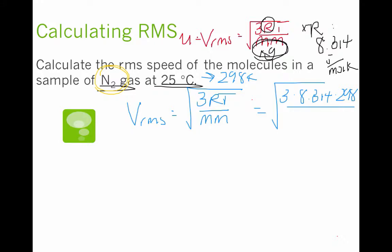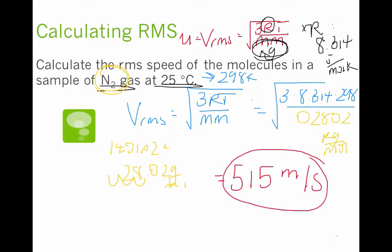So N2, not just one N, but two Ns. So we have 14.01 times 2, which is 28.02 grams per mole. We need kilograms, so I get 0.02802 kilograms per mole. The reason is because a joule is equal to a kilogram times meters squared all over seconds squared. So that's why we have to use kilograms here. So if we plug this into our calculators, we do 3 times 8.314 times 298 divided by 0.02802, and then take the square root of that entire thing, and you get 515 meters per second.